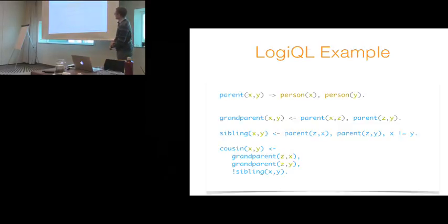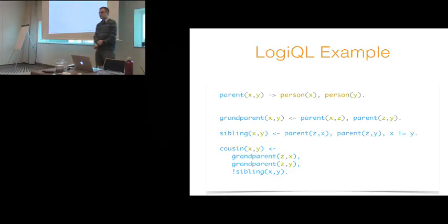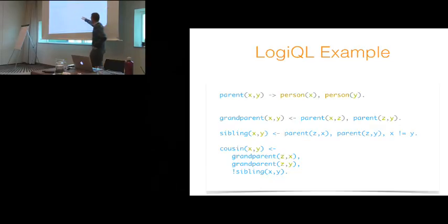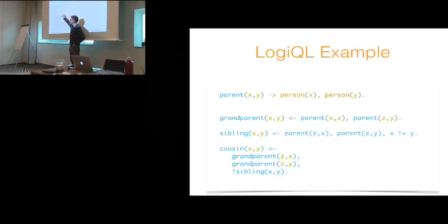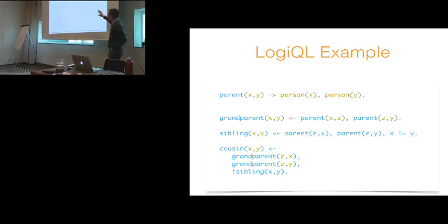Here's a tiny example of a logical computation. At the top we've got a parent relation being declared — a person here is what we call an entity type, and X is a parent of Y is the relation we're defining. From that we can write a rule that says: if X is the parent of Z and Z is the parent of Y, then you can infer that X is the grandparent of Y. Similarly, you can define siblings and cousins and so on. The idea is that in our system, this logic is installed, and every time you add a new parent relationship, all of this is automatically and quickly kept up to date.